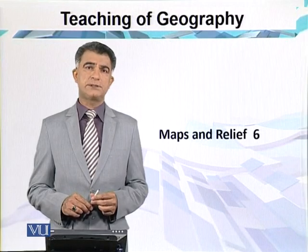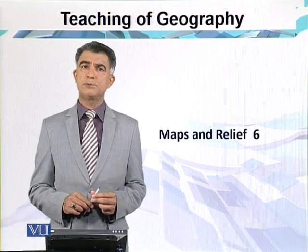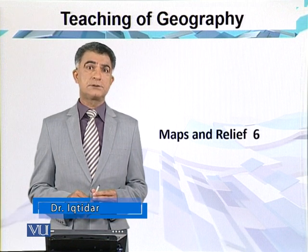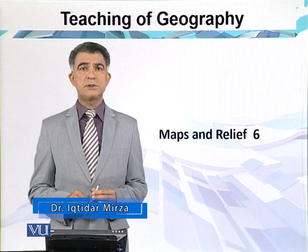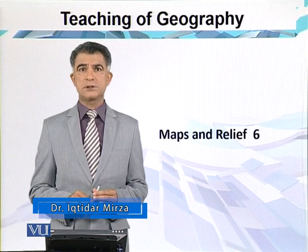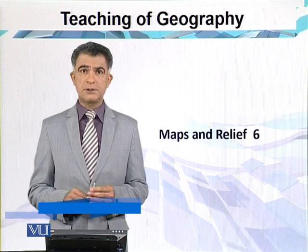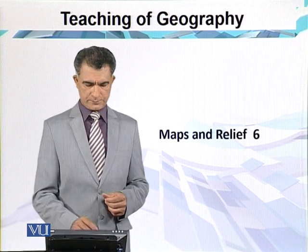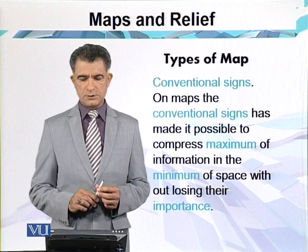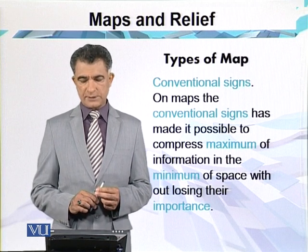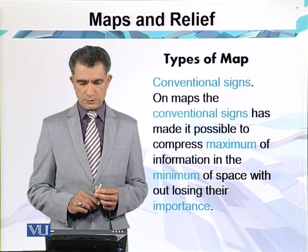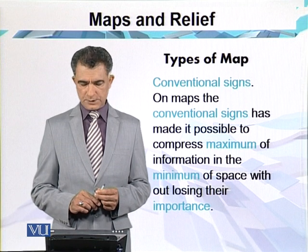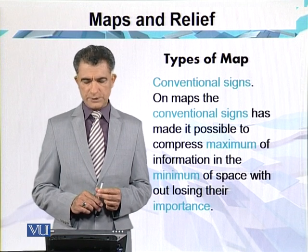Conventional signs are one of the most important components of map making. These are also called symbols. These symbols are used for the representation of relief features as well as human features. Conventional signs have made it possible to compress maximum information into minimum space without losing their importance.